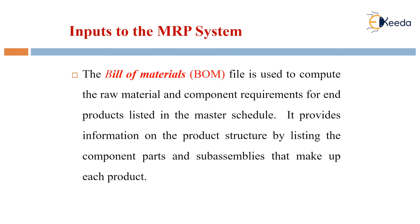The bill of materials file is used to compute the raw material and component requirements for end products listed in the master schedule. It provides information on the product structure by listing the component parts and sub-assemblies that make up each product.